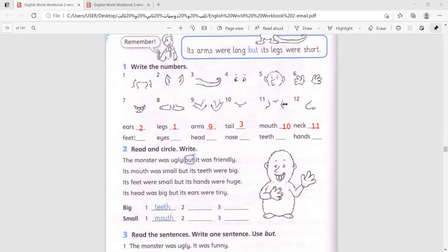Feet, eight. Eyes, four. Head, five. Nose, twelve. Teeth, seven. And hands, six.